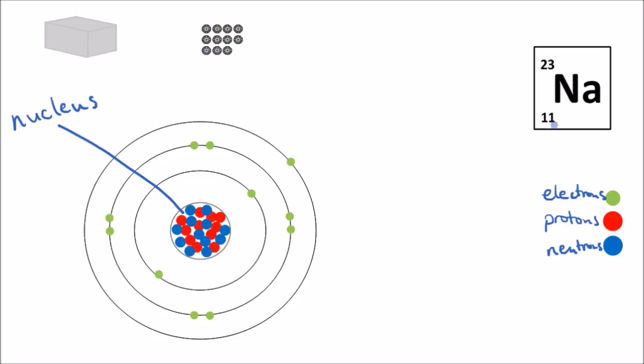The smaller number is called the proton number, and it's also called the atomic number as well. So that's the smaller number there, 11.